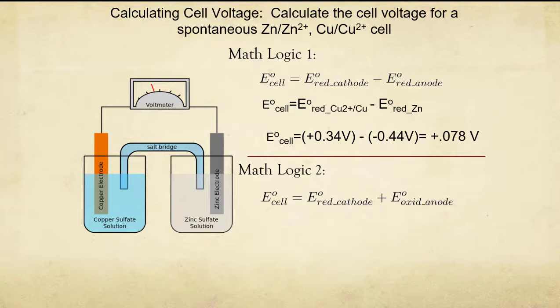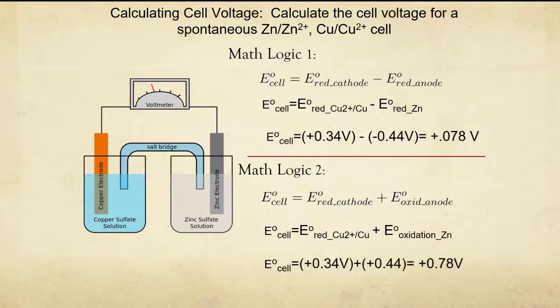For the logic where instead you use the reduction value and the oxidation value, meaning you have to switch sign, you'll want to think about which value will switch its sign, when switching its sign is going to lead you to a positive value of V. In this case, since we have both a positive and a negative value, you would want to switch the sign of your negative value and add it in order to get an overall positive value. And then, of course, plug in your numbers to make sure that you are correct.